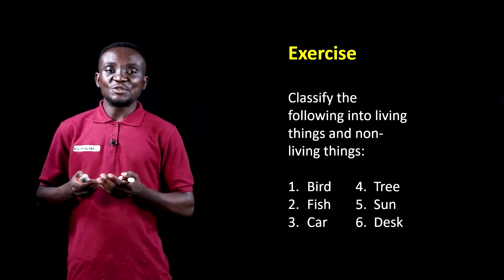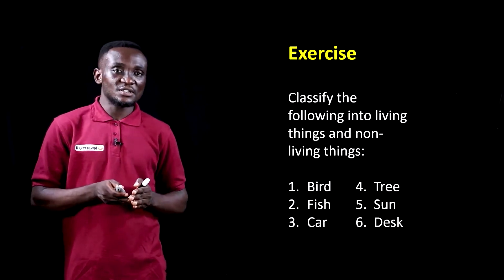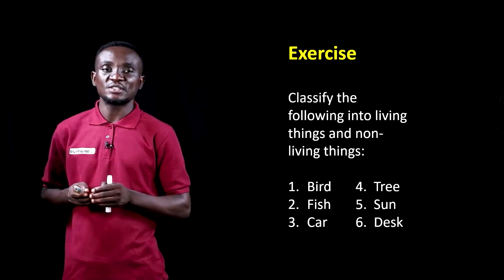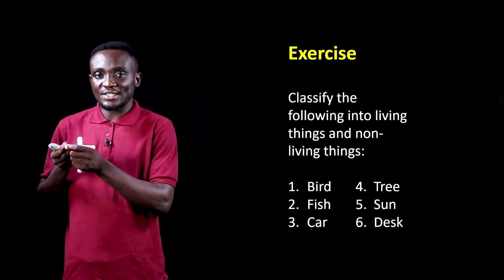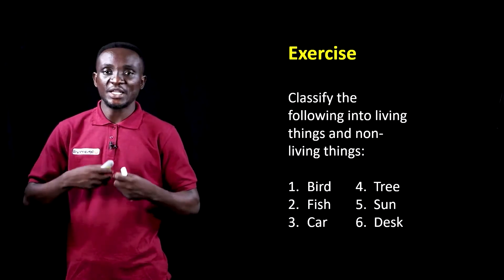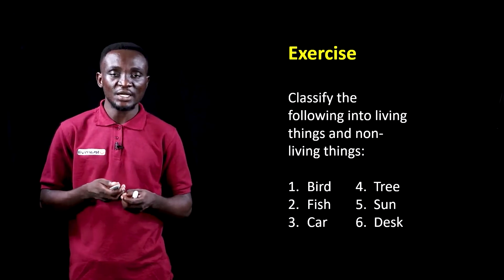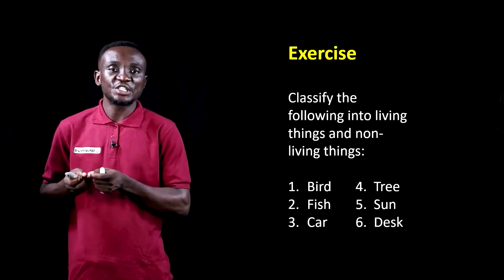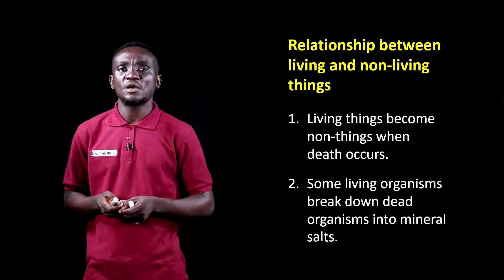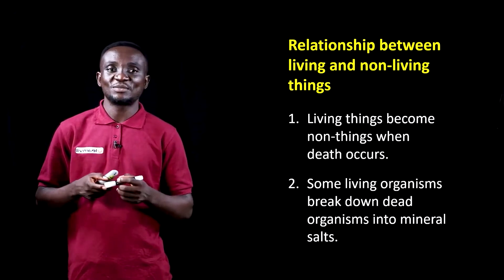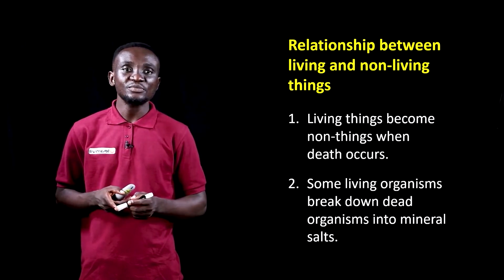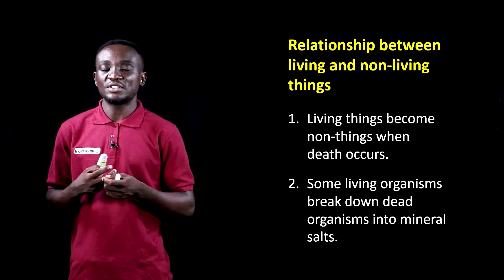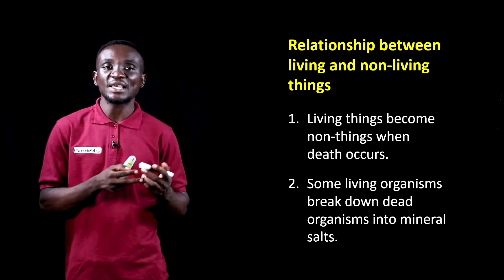Relationships exist largely between living things and non-living things. For example, a human being can sit on a chair around a table to eat, write, or learn — a classical example of a relationship between living things and non-living things. Also, all living things become non-living things when they die, so a living thing at the point of death and beyond becomes a non-living thing.